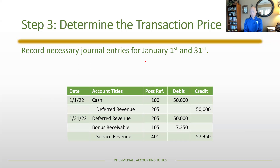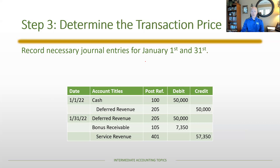We can recognize revenue for the bonus because we've transferred the good or service and have an expectation of payment. At the end of January, we unwind the deferred revenue of $50,000 and record the expected bonus. Total service revenue on January 31st is $50,000 + $7,350 = $57,350, representing the expected value of services provided.